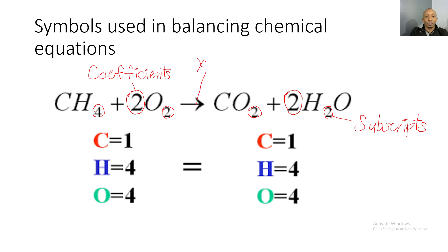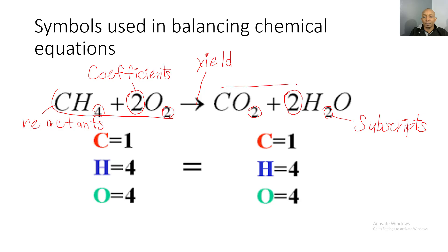The arrow in the middle is your yield sign, and the yield sign symbolizes that a chemical reaction is taking place. We have our reactants on the left side, and after the chemical reaction we have our products on the right side. Similarly, we have reactants — carbon, hydrogen, oxygen — on the left hand side, and we list how many of each we have before the chemical reaction. On the product side we have the same elements, because remember, matter cannot be created or destroyed.